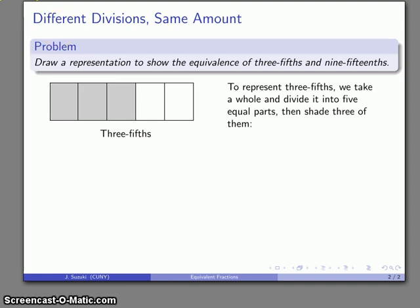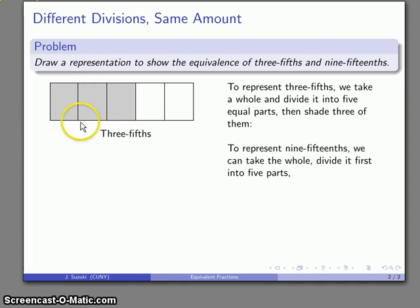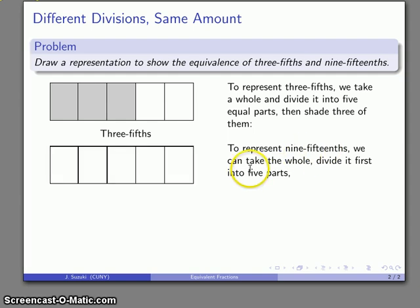Now what if I want to represent 9 fifteenths? So what I'm going to do here is I'm going to take the whole and rather than draw 15 vertical parts, what I'm going to do is I'm going to split this up a little bit. And I'm going to take advantage of the fact that I can divide something into 15 by first dividing it into 5 parts, and then dividing it into 3 parts.